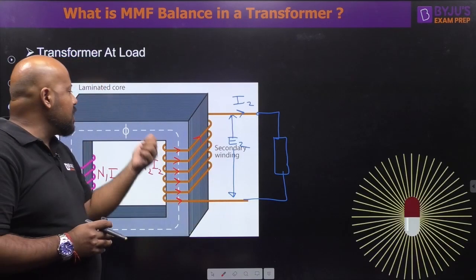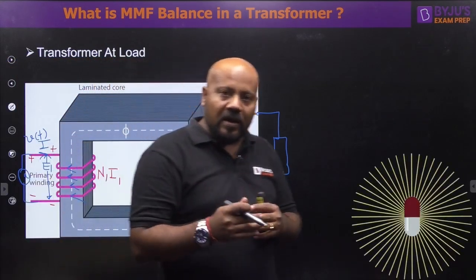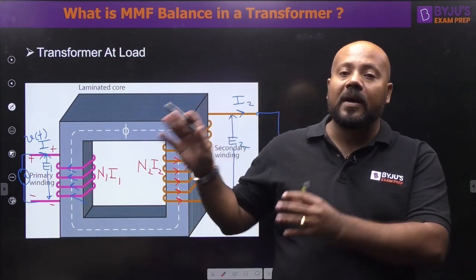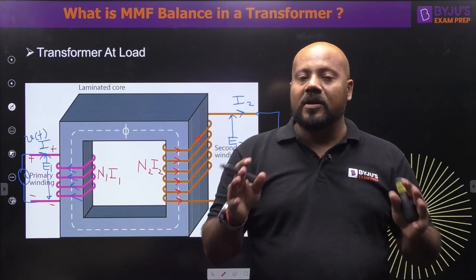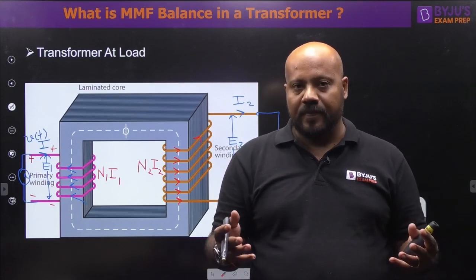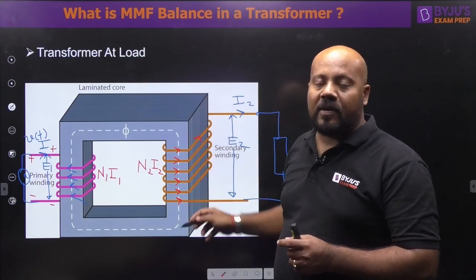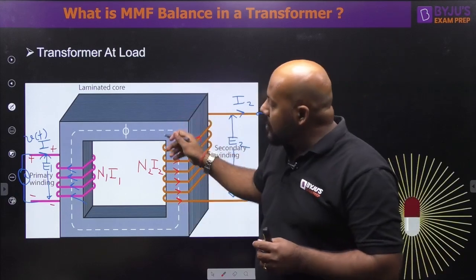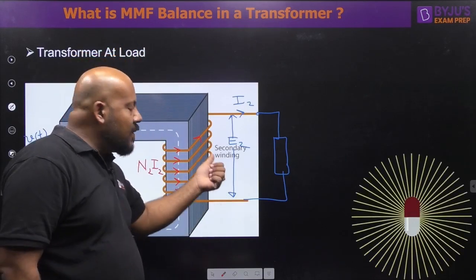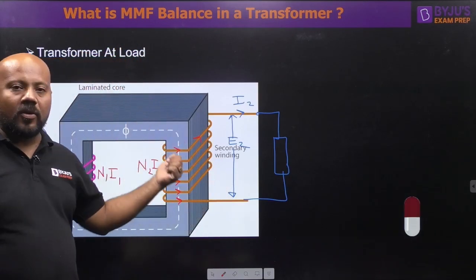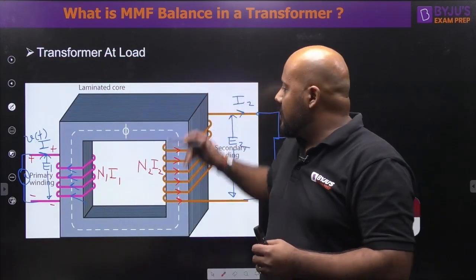The secondary MMF N2*I2 tries to oppose the flux by developing a flux opposing the main core flux. However, the flux in the core is not decided by the current or EMF in the secondary side — it is decided by the source connected at the primary side. So even though this secondary MMF wants to reduce the flux, the flux in the core cannot be reduced instantaneously, because it is controlled by the source.